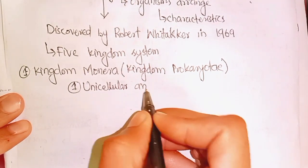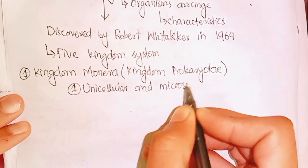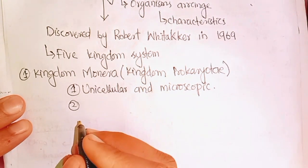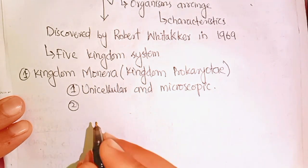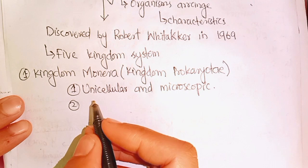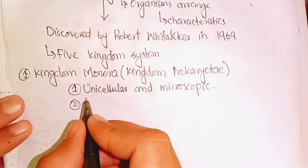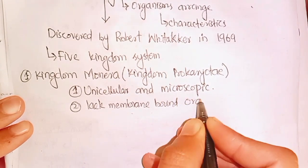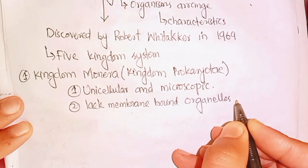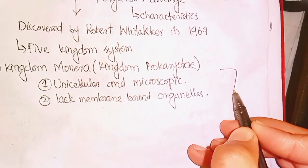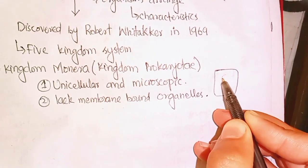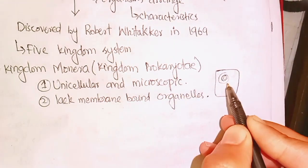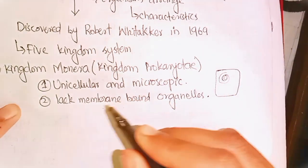Kingdom Monera organisms are unicellular and microscopic. These organisms lack membrane-bounded nucleus and other membrane-bound organelles inside the cell. This means the nucleus has no boundary — there is no membrane-bound organelle, so the nucleus lacks a membrane.